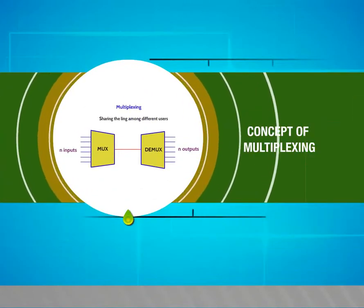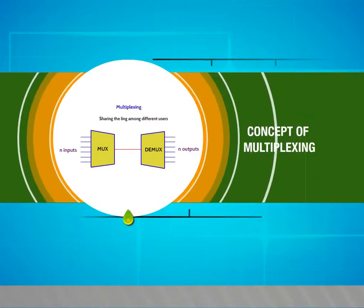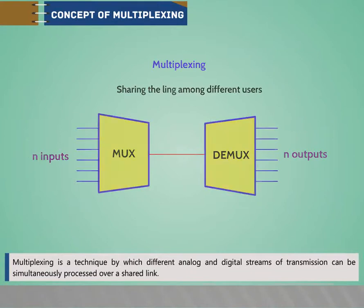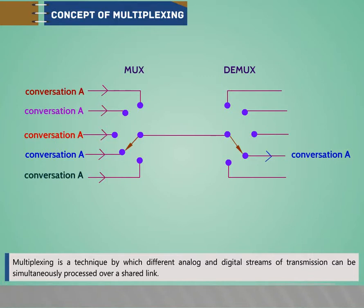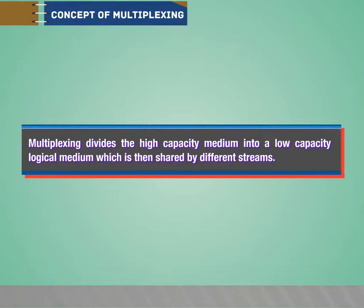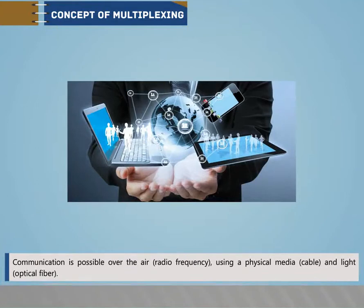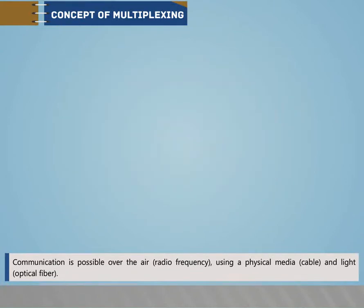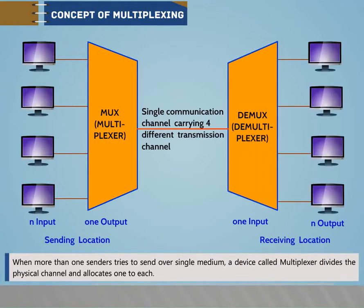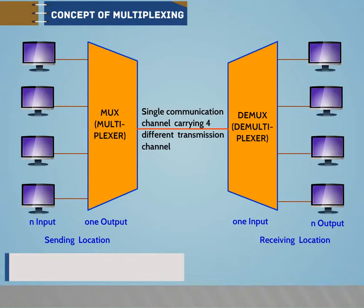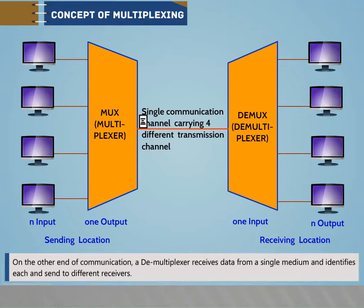Concept of Multiplexing. Multiplexing is a technique by which different analog and digital streams of transmission can be simultaneously processed over a shared link. Multiplexing divides the high-capacity medium into low-capacity logical channels shared by different streams. Communication is possible over radio frequency, physical cable, or optical fiber. When more than one sender tries to send over a single medium, a device called a multiplexer divides a physical channel and allocates one to each sender. A demultiplexer at the other end receives data from a single medium, identifies each stream, and sends it to different receivers.